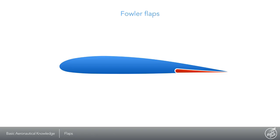Fowler flaps are similar to slotted flaps but they move back and down when extended. They increase the effective wing surface area and camber, resulting in more lift.